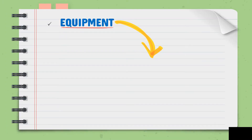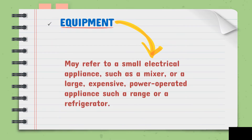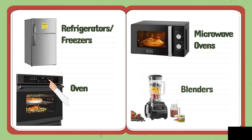We have equipment. Equipment may refer to a small electrical appliance such as a mixer, or a large, expensive, power-operated appliance such as a range or a refrigerator. Equipment helps us make cooking easier. We also store food in equipment — for example, the refrigerator where we store frozen foods. The second is the oven, where we bake pastries. Then the microwave oven, used to preheat or heat food. And the last is the blender.